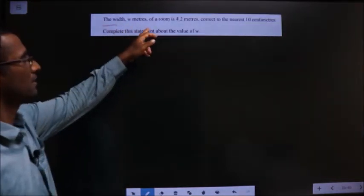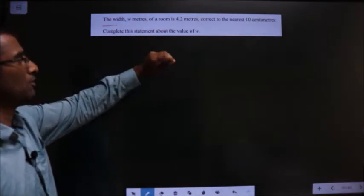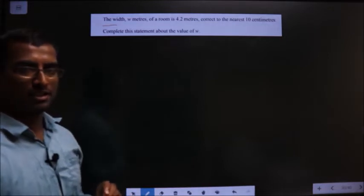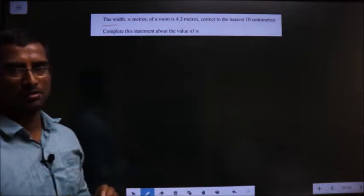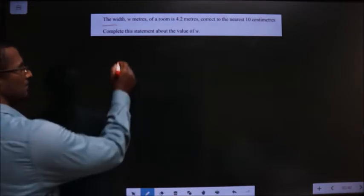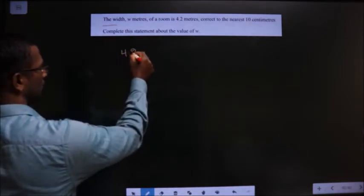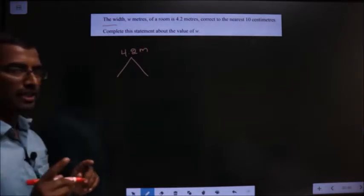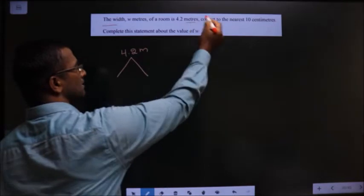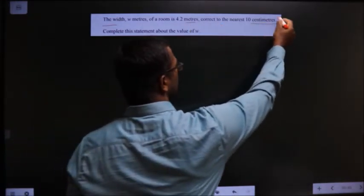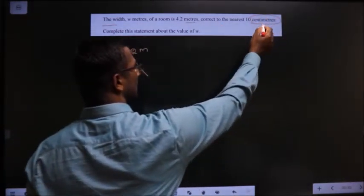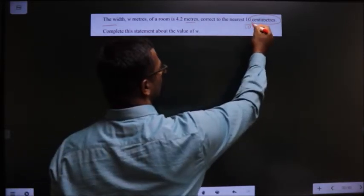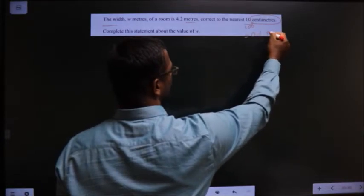The width W meters of a room is 4.2 meters, correct to the nearest 10 centimeters. First, let us write the lower and upper bound for the given number. The given number is 4.2 meters. Here you should get the idea — this is in meters and here it is in centimeters, so first convert this also to meters. For that, divide by 100, and we get 0.1 meters.